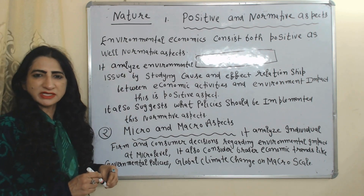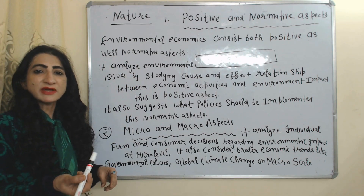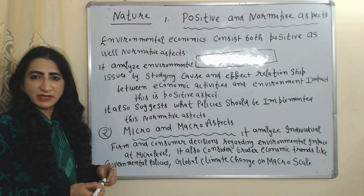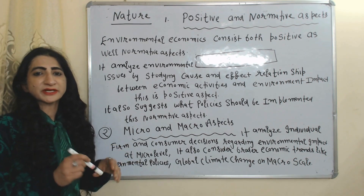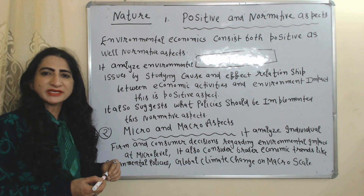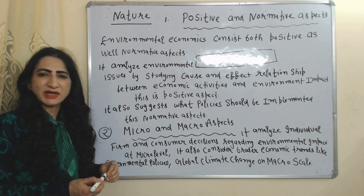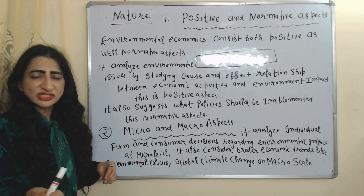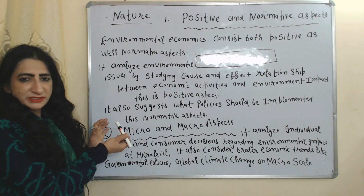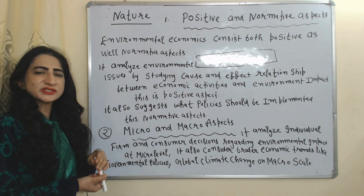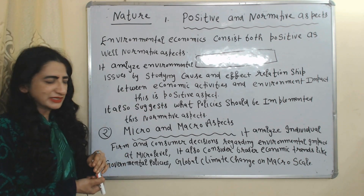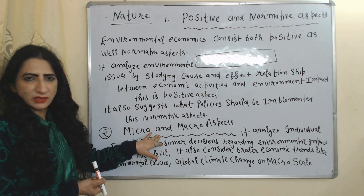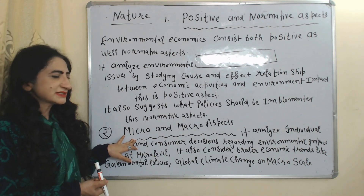Now, the nature of environmental economics. Environmental economics consists of both positive as well as normative aspects. Positive aspects are based on evidence — for example, environmental economics studies the cause and effect relationship between economic activities and environmental impact. Normative aspects are based on opinion and suggestion — for example, environmental economics suggests what policy should be implemented.